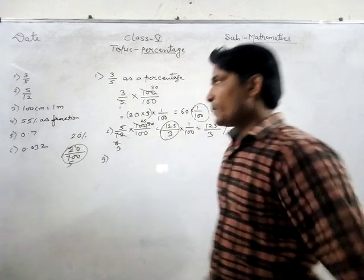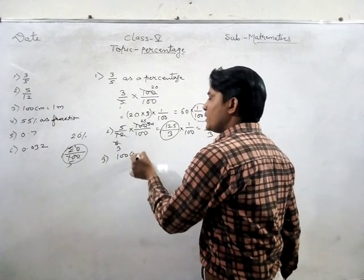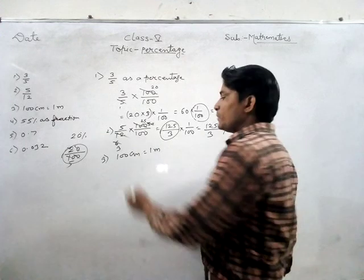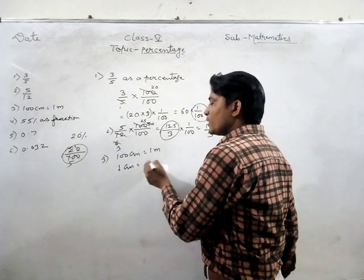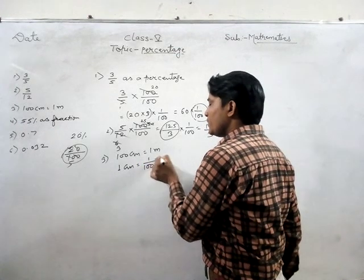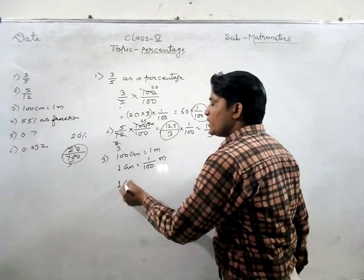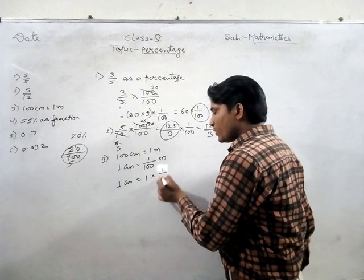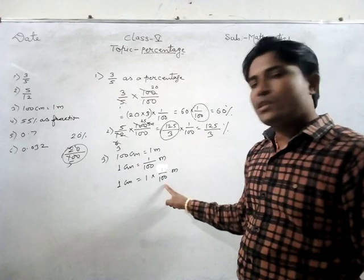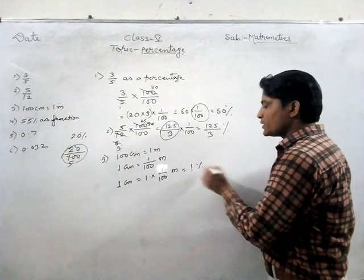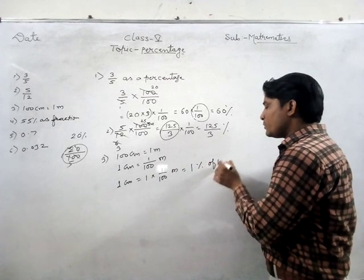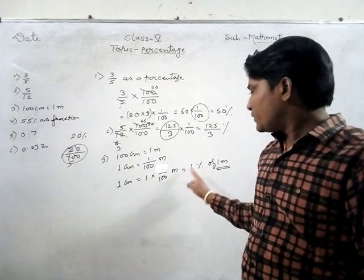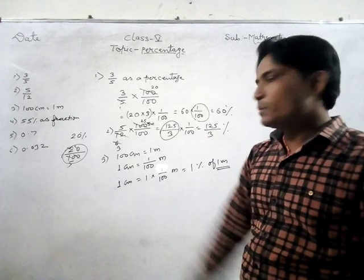Third question: we know that 100 centimeters equals 1 meter, so 1 centimeter equals 1 upon 100 meters. What is 1 centimeter as a percent of 1 meter? We write 1 into 1 upon 100 meters, and since 1 upon 100 is the symbol of percent, 1 centimeter is 1 percent of 1 meter.